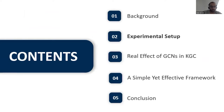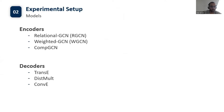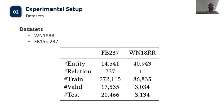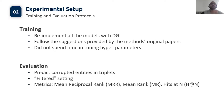Next, I introduce the experimental setup. For encoders, we study three representative GCN models: RGCN, WGCN, and CompGCN. As decoders, we use three popular models: TransE, DistMult, and ConvE. Many existing state-of-the-art GCN-based KGC models use the binary cross-entropy loss, and we follow their settings, regarding all triplets not seen in the training set as negative samples. We use two popular knowledge graph completion datasets, whose statistics are summarized in the table. We re-implement RGCN, WGCN, and CompGCN with DGL. As we aim to isolate the effects of GCNs rather than benchmarking GCN-based KGC models, we follow the guidelines from original GCN papers or official implementations for model selection without tuning hyperparameters.